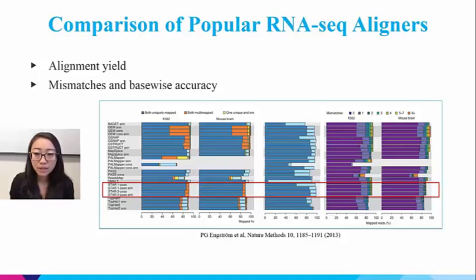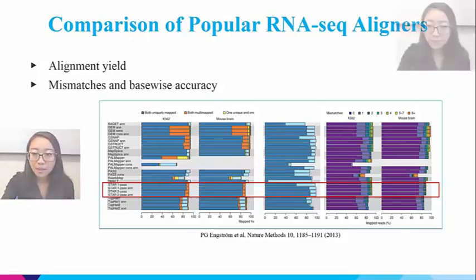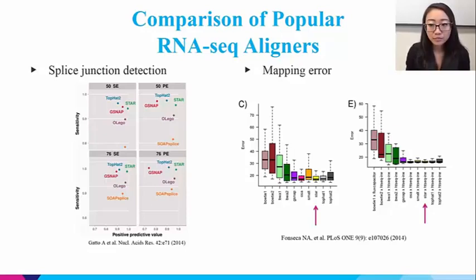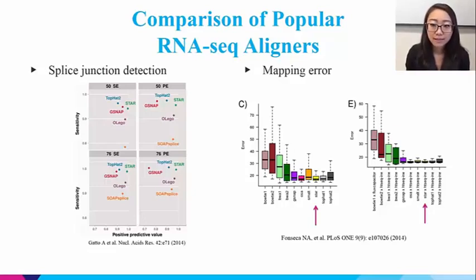These aligners are evaluated with experimental data and simulation data in terms of alignment yield, mismatches and basewise accuracy, splice junction detection, and mapping errors. STAR shows robust performance across different studies and is usually ranked among the best RNA-seq aligners. This means that STAR does not sacrifice accuracy or robustness for speed. However, it does take up a lot of memory — peak memory for STAR can go up to 30 GB. Therefore, I only recommend using STAR if you're running on a server or local desktop with at least 32 GB memory and 4 to 8 CPU cores.